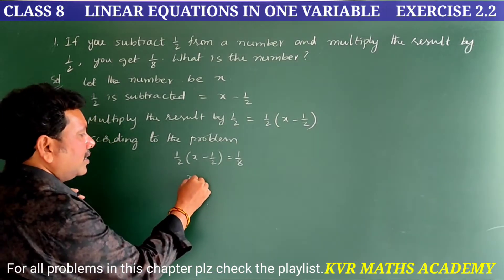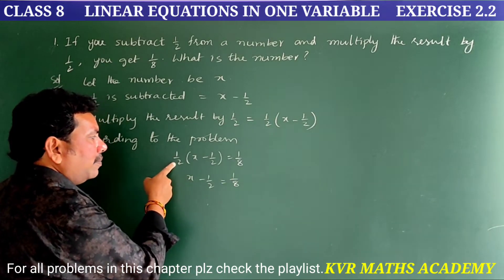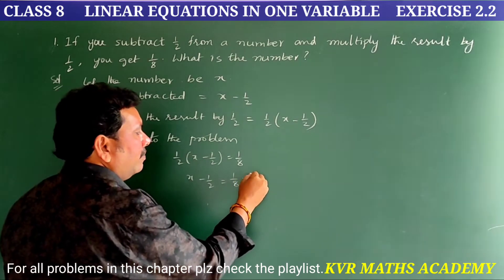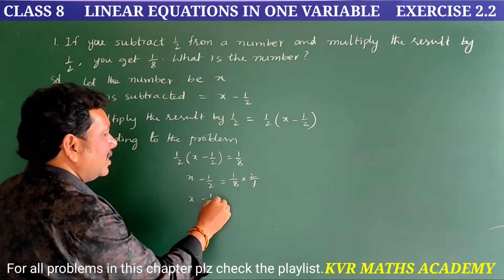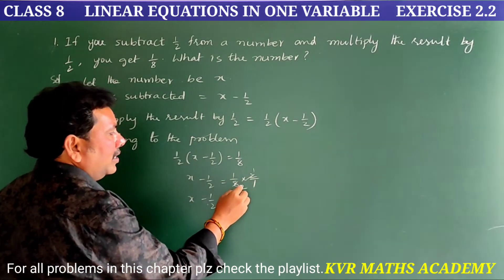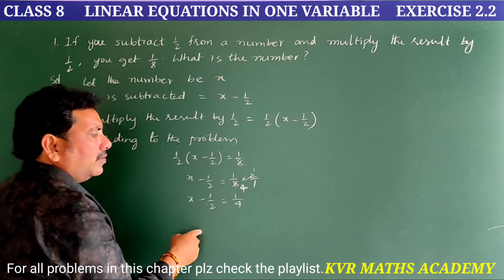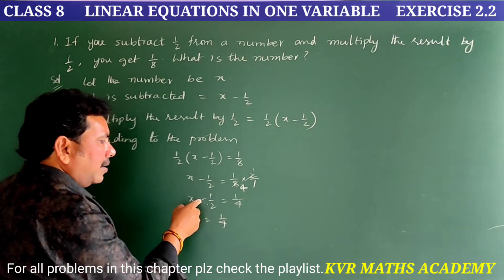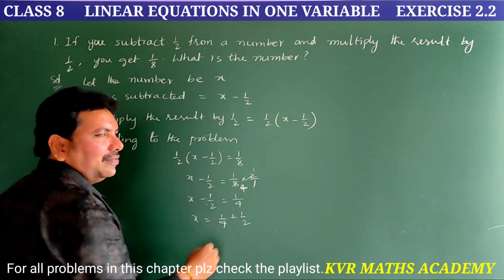So we have to solve the equation and find the value of x. Here, x minus 1/2 = 1/8 ÷ (1/2). Dividing by 1/2 means multiplying by its reciprocal 2/1, so x minus 1/2 = 1/4. Therefore x = 1/4.